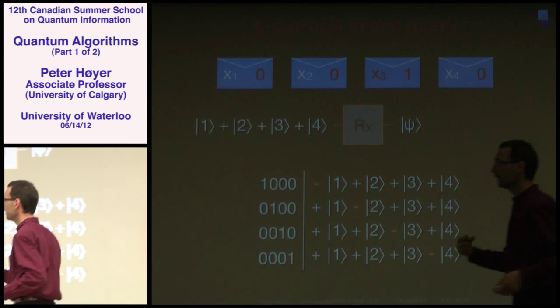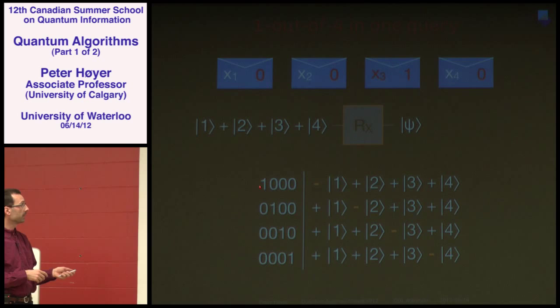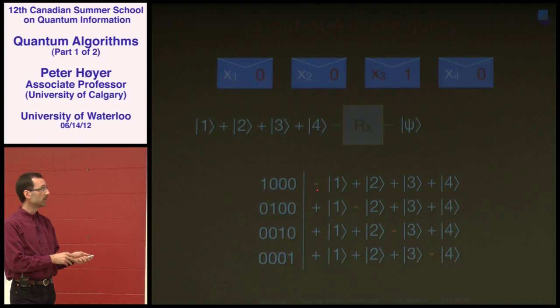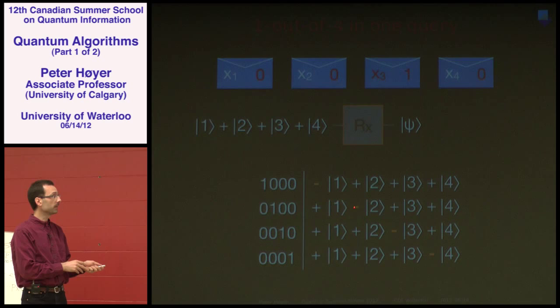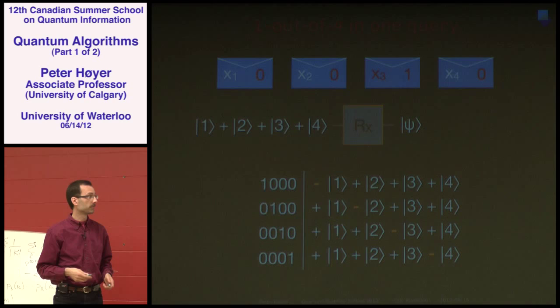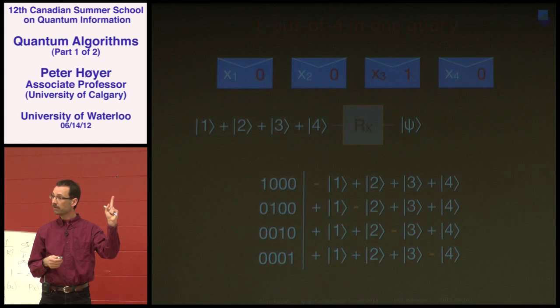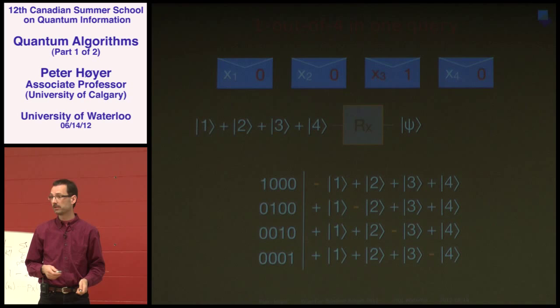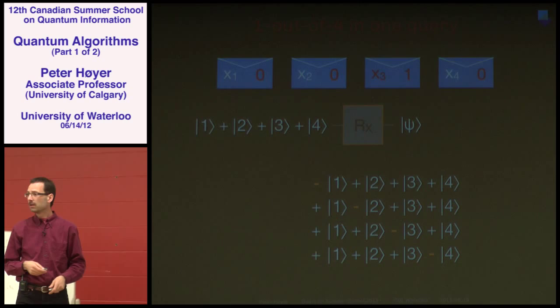There are four possible places where the one can be. If it's in envelope one, we negate that phase; if it's in envelope two, that phase is negated — and so forth. We pick up exactly one minus sign depending on where the unique one is. After asking the phase oracle just once, we have one of four states, and we know exactly which four states are possible.